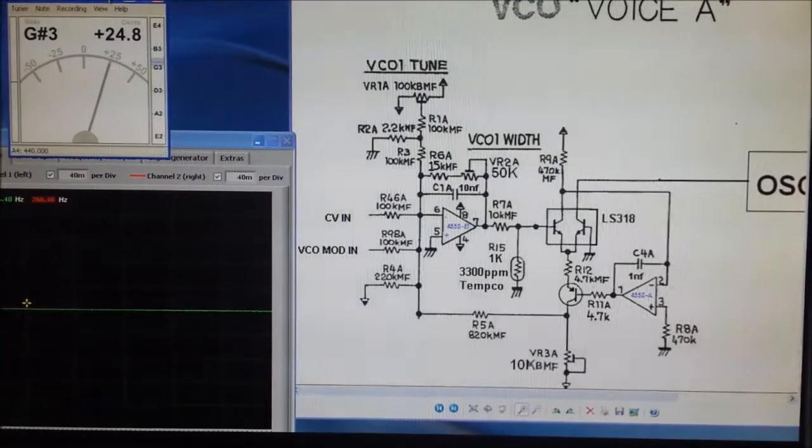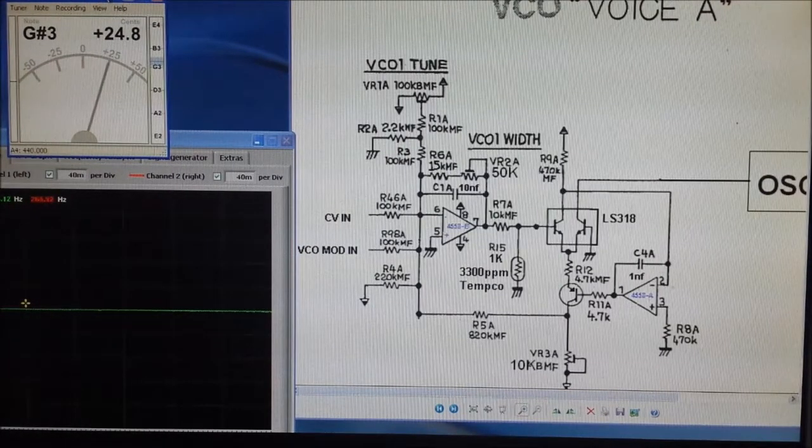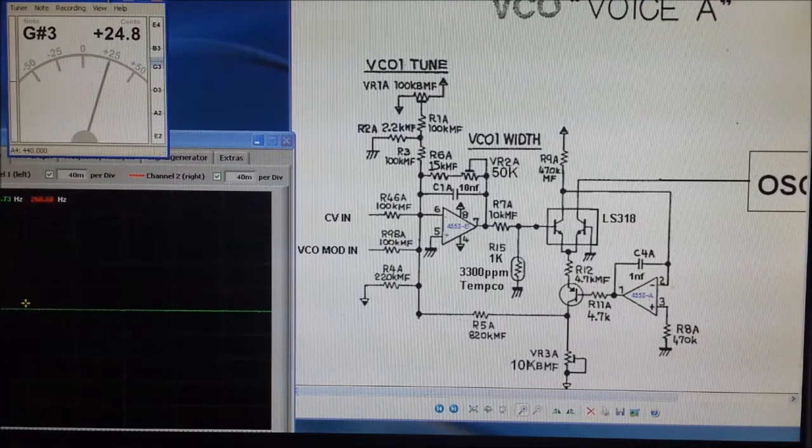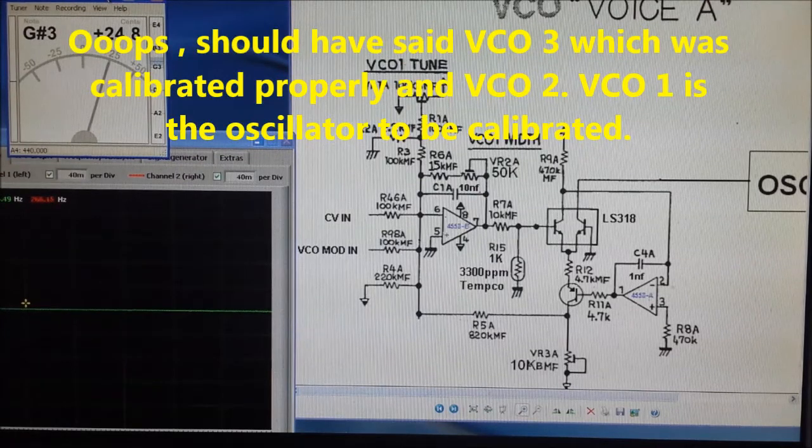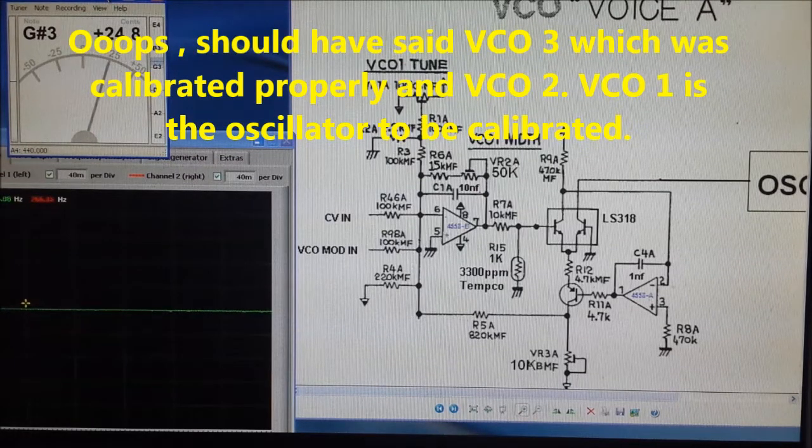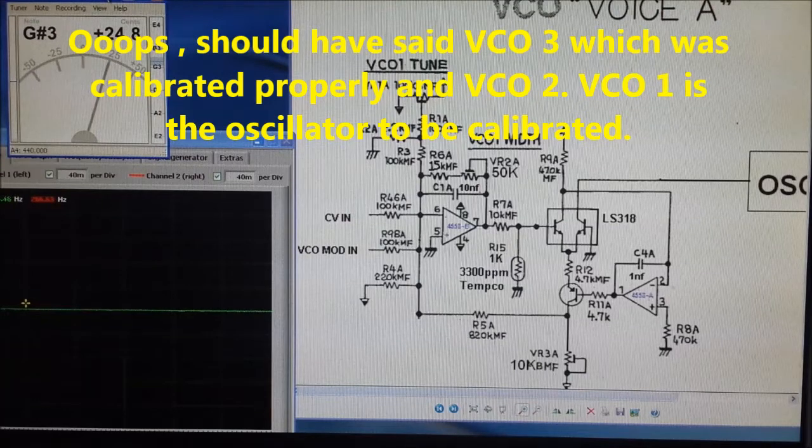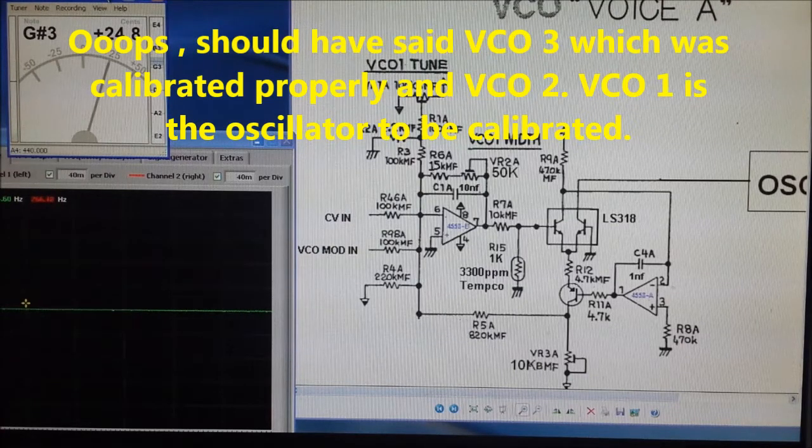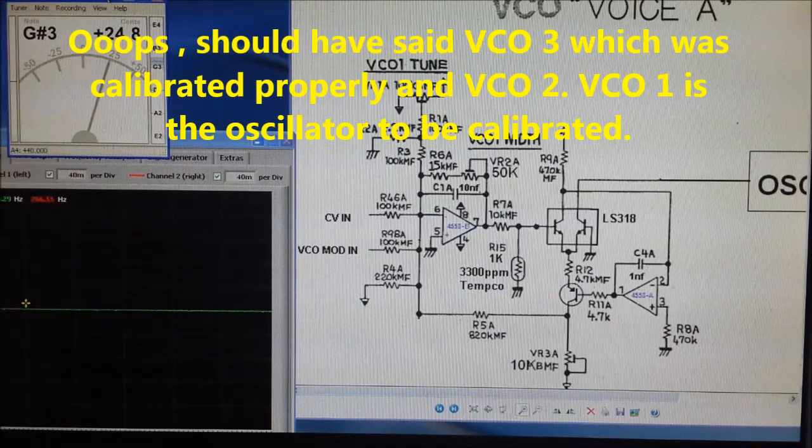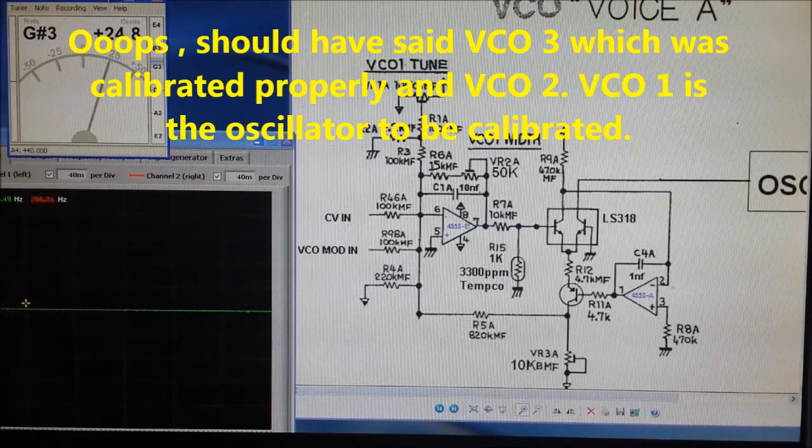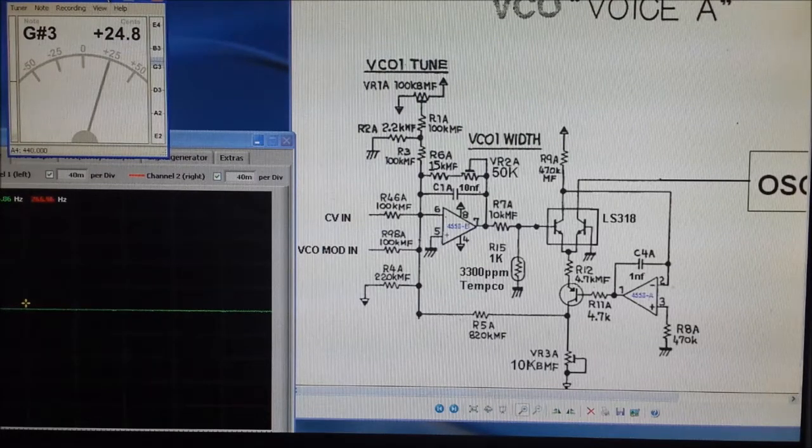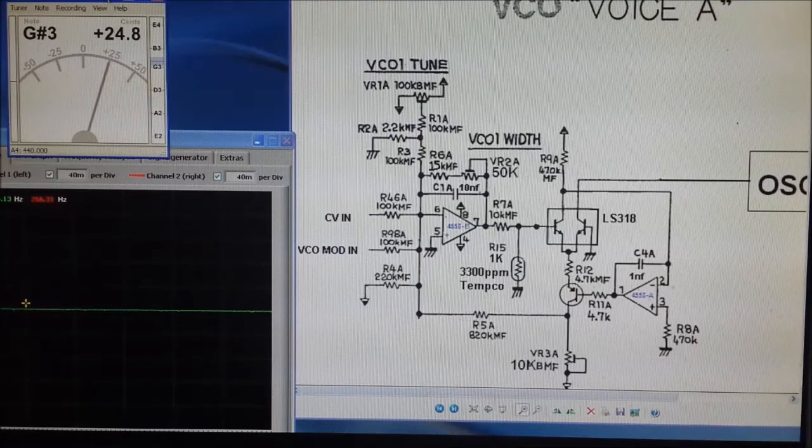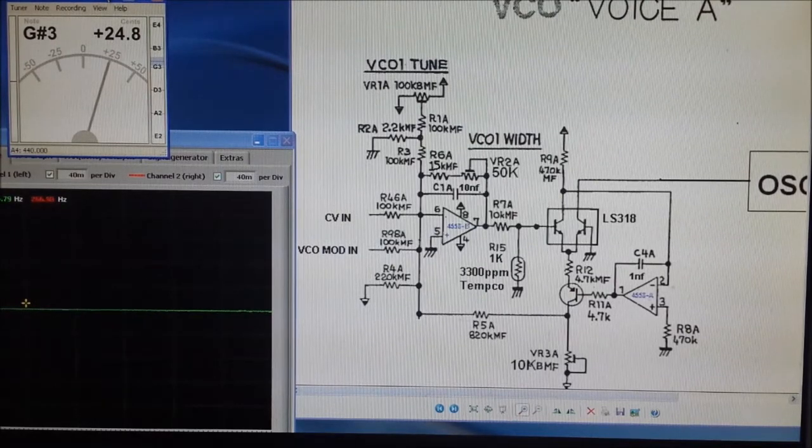Before we start, one of the things you need to make sure is that you leave a good half an hour to 40 minutes for the whole circuits to warm up. These VCOs, because they are analog, will need time to warm up and there is no digital auto tuning. I'll go to VCO 3 which is already calibrated.